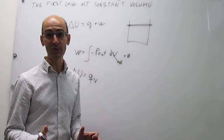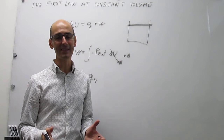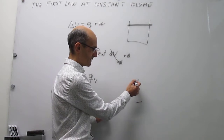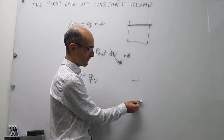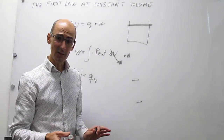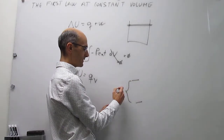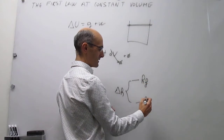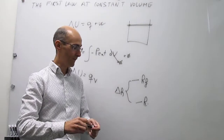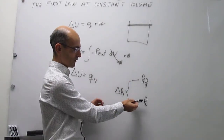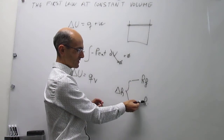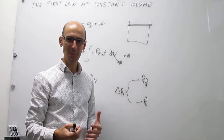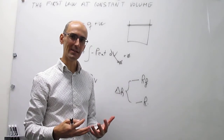We're going to illustrate that with height, because height is also a state function. Suppose that I ask you to calculate the change in height between two points — we're moving the marker from this point to that point. To calculate the change in height, the only thing you actually need is to specify the final height and the initial height. The pathway taken by the marker from the initial point to the final point is completely irrelevant. You can change the height this way or that way — the change in height in those two processes is exactly the same, because height is a state function and is not path dependent.